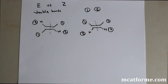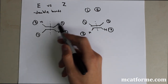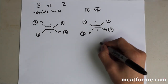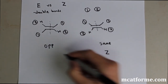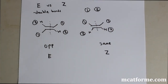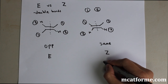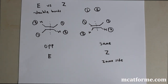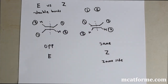Once priorities are assigned, determine whether the number 1 groups on each carbon are on the same side or opposite sides. If they're on the same side, it's Z; if they're on opposite sides, it's E. A mnemonic to remember this: Z stands for 'same side' — my teacher told me that and I never forgot it. Mnemonics like this will save you on the MCAT by cutting down on what you have to memorize.